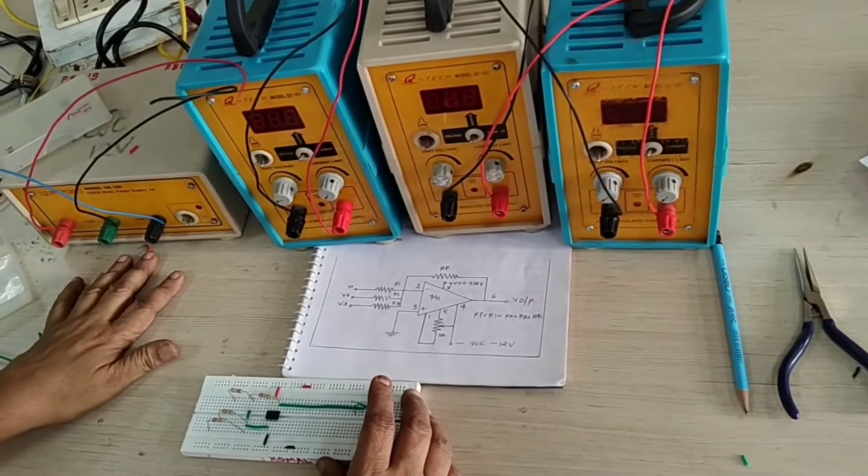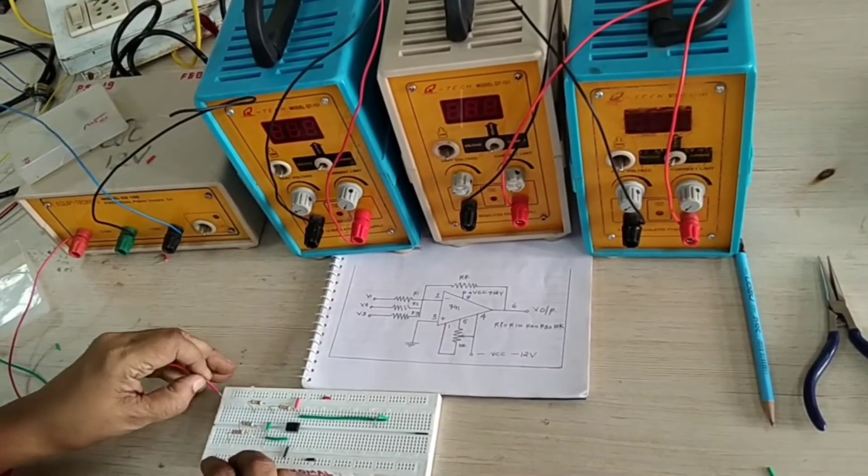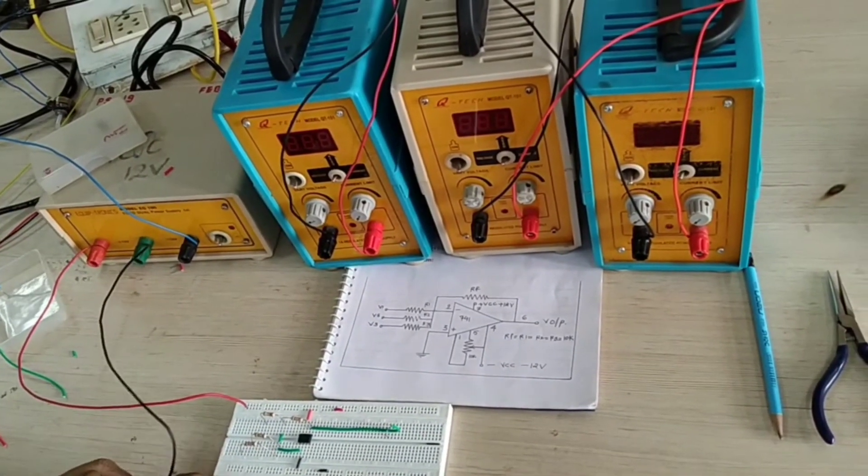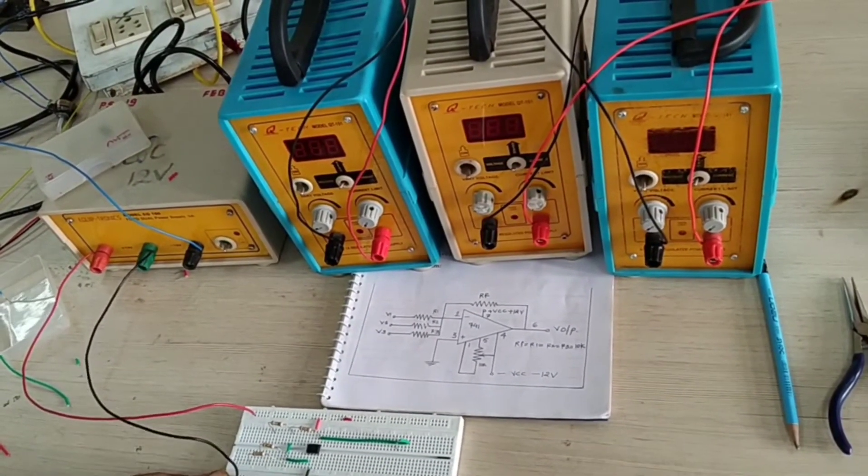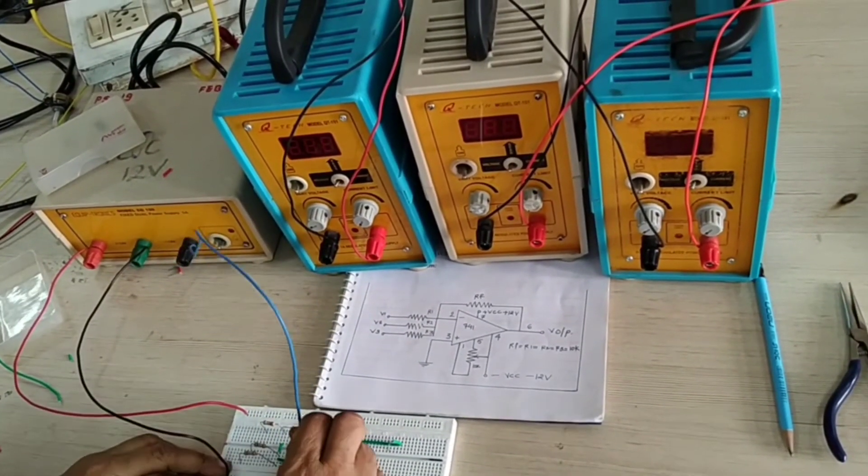Now see, this is your dual power supply. We are connecting like this. This is the red color is your pin number 7, we are connecting VCC. This green is your common ground, we are connecting ground place. And this is minus 12 voltages, we are connecting it in number 4.